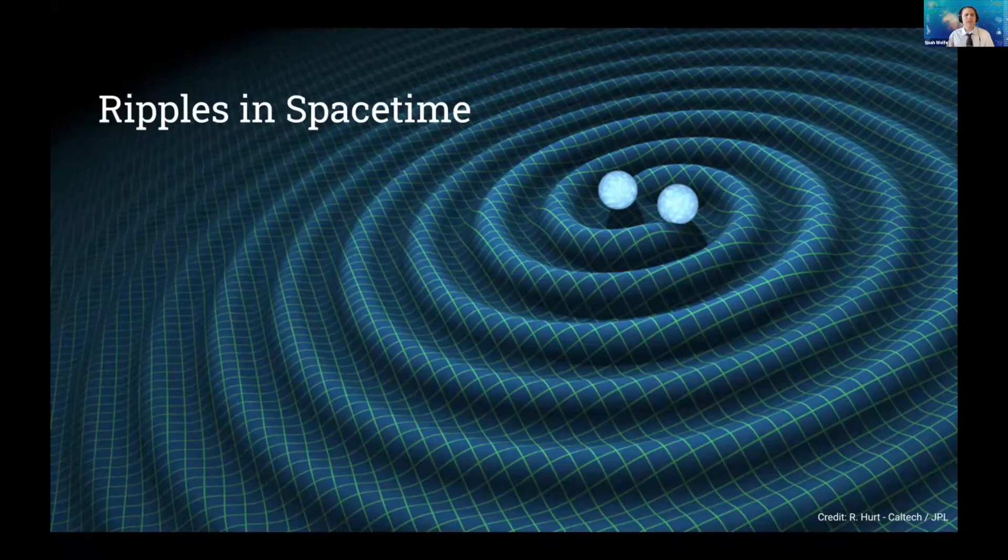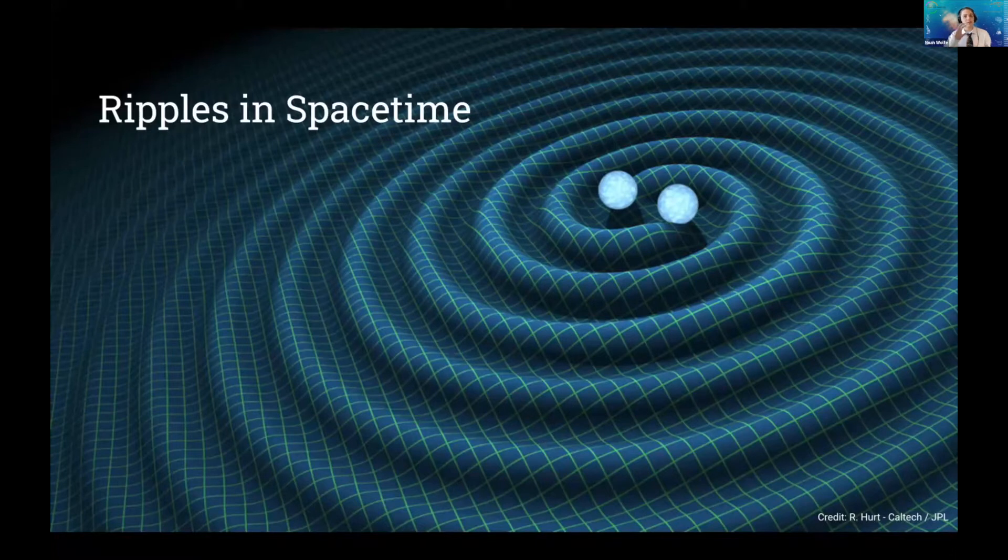But recently, we actually discovered a new way to study these systems using ripples in the very fabric of space-time itself called gravitational waves. It turns out that when two black holes or two neutron stars merge together, they send out these ripples in the very gravitational firmament of the universe, causing space to stretch and squeeze in a periodic fashion.